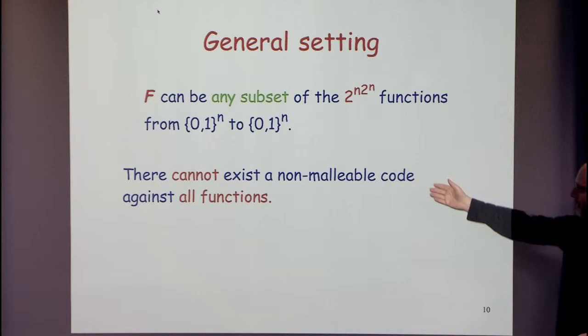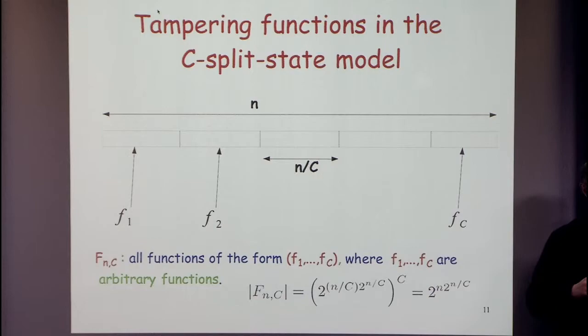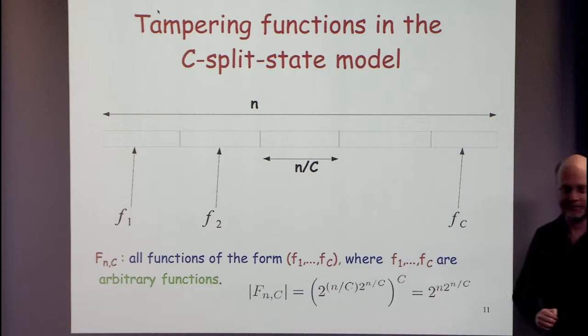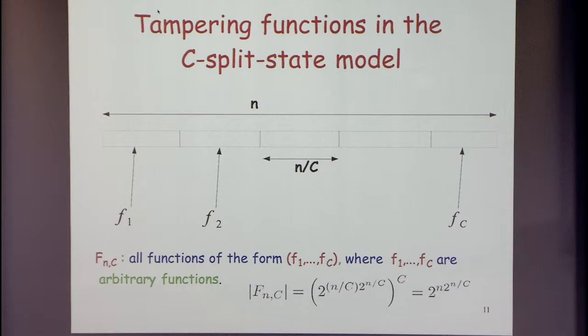The functions we'll be interested in are called the C split-state model. Here we have all n bits, divide them into C blocks of length n/C, and allow arbitrary corruption in each block. We still have doubly exponentially many functions, but it's not all functions.